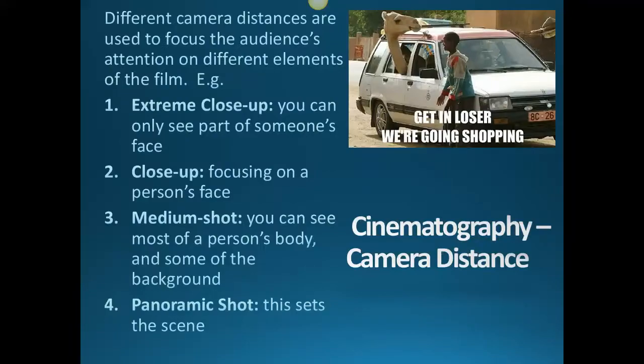Camera distance is also quite important in this text and is used quite a lot. Different camera distances are used to focus the audience's attention. An extreme close-up is used quite a bit — you can only see part of someone's face. We get that particularly in scenes where we need to see that Jeff is frightened. We also have quite a lot of close-ups where we focus in on a person's face.